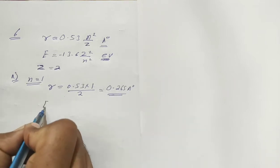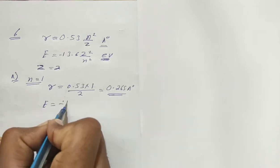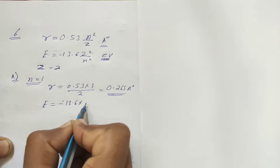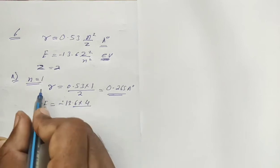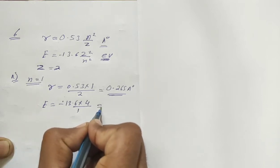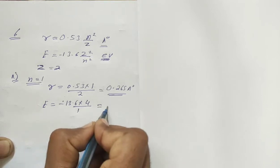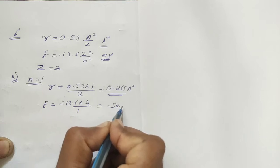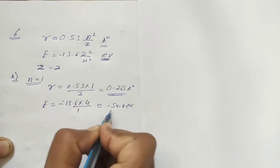Next, energy is minus 13.6 z squared upon n squared. With n equals 1 and z equals 2, this is 13.6 times 4, which equals 54.4 electron volts.